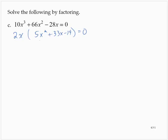Now focusing on the trinomial, using the AC method, 5 times negative 14 is negative 70, so I need a pair of numbers that multiplies to negative 70 and adds to 33. My factor pairs multiply to negative 70 and add to 33.